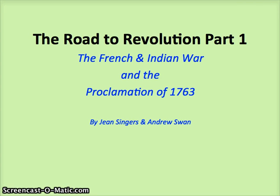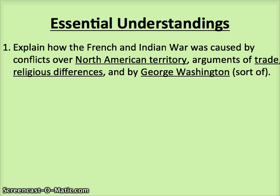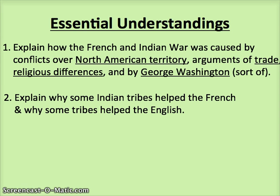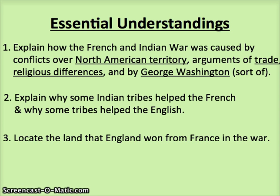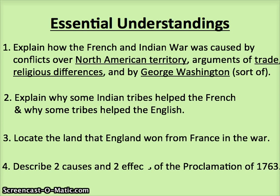This is the first of a series of videos about the road to the American Revolution. This one covers the French and Indian War and the Proclamation of 1763. By the end, you should be able to explain the causes of the French and Indian War, including George Washington's role. You'll learn about how Indian tribes helped the French and why some helped the English — Indians were on both sides of this war — and the causes and effects of the Proclamation of 1763.